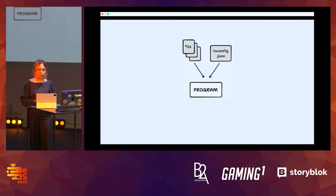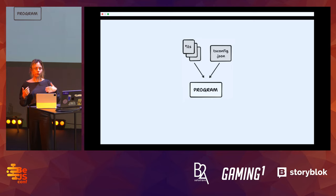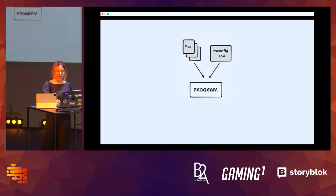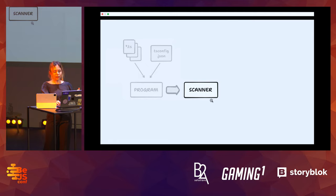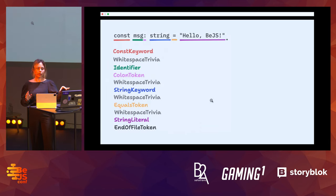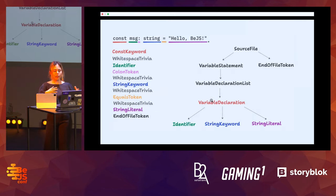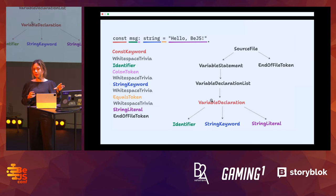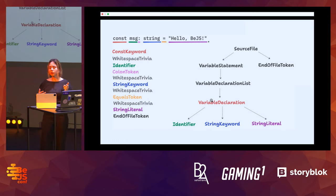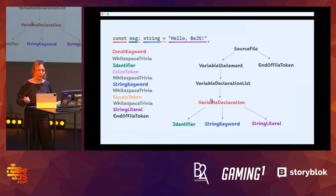It starts with a Program — the most important part. It's an object that has all the compilation context. It takes your TypeScript files and a configuration. Then we have a Scanner, which takes your code and converts it to a stream of tokens. After that we have the Parser, which brings context to those tokens. For the same example, we get an abstract syntax tree — so when the parser sees a 'const' keyword, it knows there will be a variable declaration, and when it sees an identifier, it knows it's the identifier for that variable declaration.